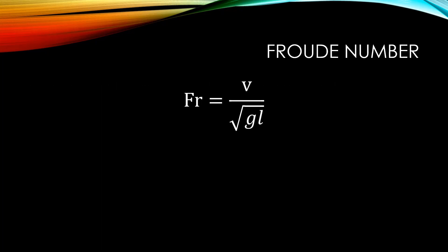We can use the Froude number to classify a flow into three different categories. First, if the velocity is higher than the gravitational force term and our Froude number is greater than 1, we can classify the flow as supercritical or rapid. This means that the inertial forces have more influence on the flow than the gravitational forces. Supercritical flows are usually characterized by having shallow depths and relatively high velocities.